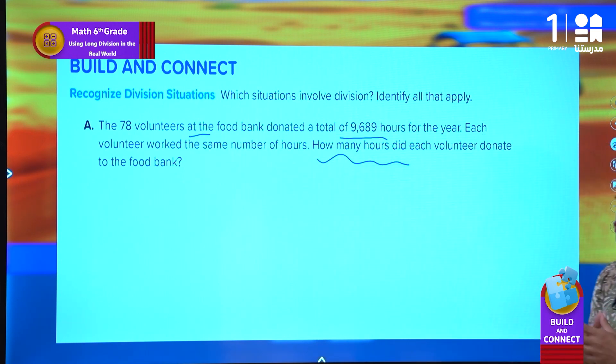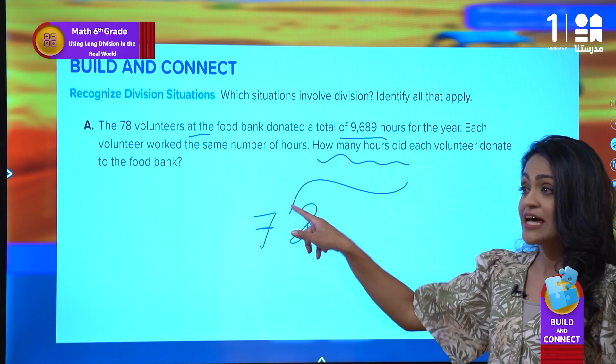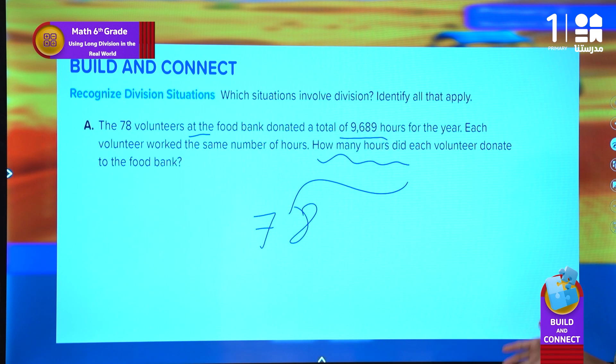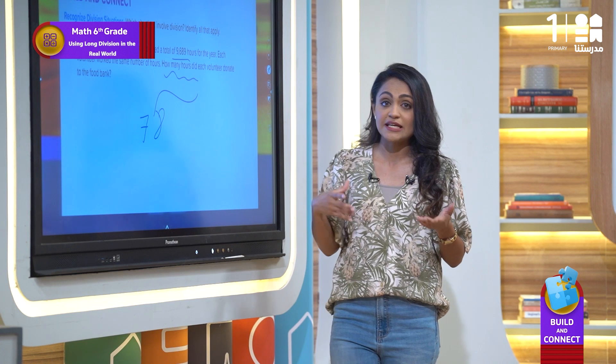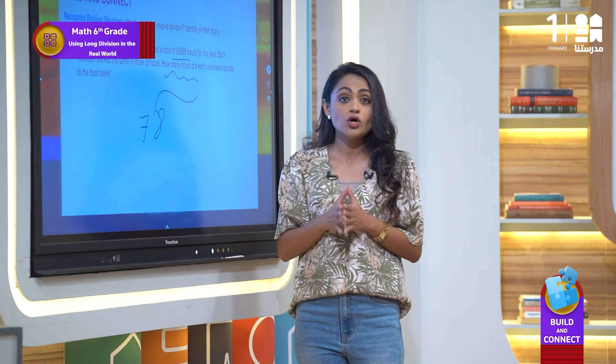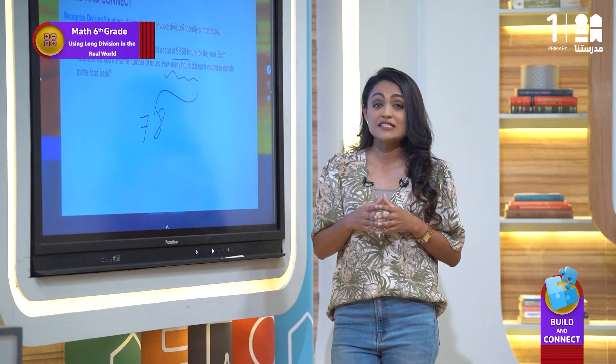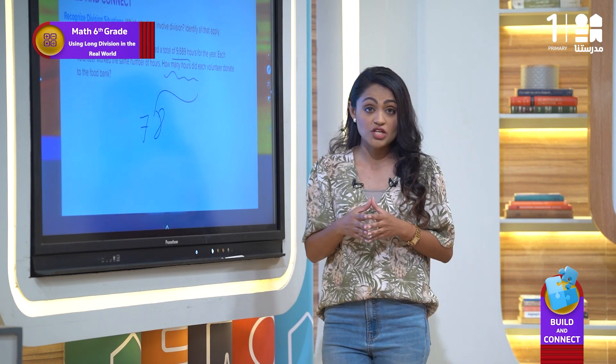What do we need to do? As we learned before, we use division to find the number of groups or number of elements in a group. In this situation, we have 78 volunteers, and we will consider the number of groups. We want to know the number of hours each volunteer worked, so we want to know how many elements are in a group. This means that we will use division in this situation.